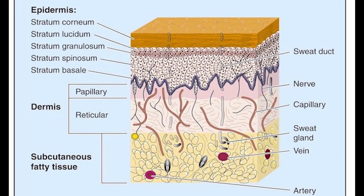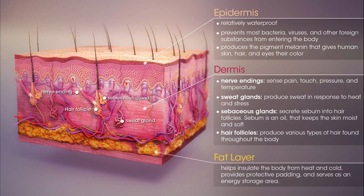The dermis also harbors many mechanoreceptors, or nerve endings, that provide the sense of touch and heat through nociceptors and thermoreceptors. It contains hair follicles, sweat glands, sebaceous glands, apocrine glands, lymphatic vessels, and blood vessels. The blood vessels in the dermis provide nourishment and waste removal for its own cells as well as for the epidermis. Dermis and subcutaneous tissues are also thought to contain germinative cells involved in the formation of horns, osteoderm, and other extraskeletal apparatus in mammals.